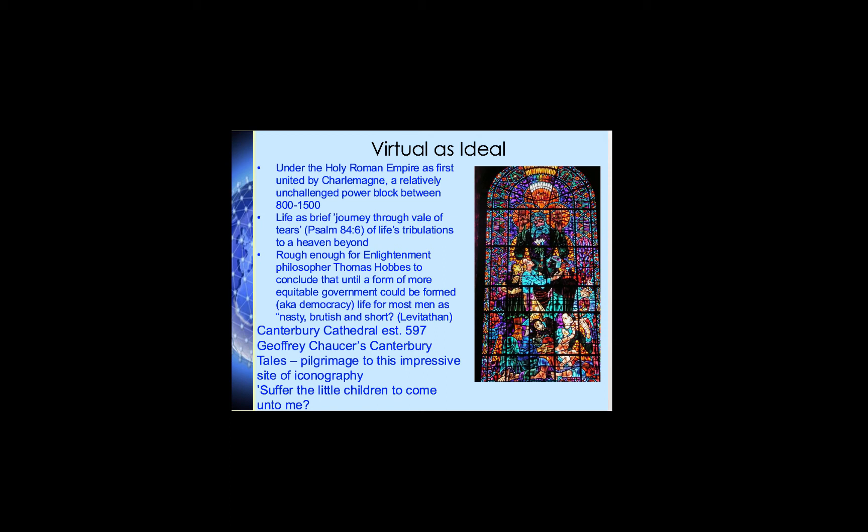The Holy Roman Empire, first united by Charlemagne, was a relatively unchallenged power block between the years 800 and 1500 — a period in which Europe was hugely united in a way that created a power block of Christendom versus the Caliphate versus the Hebrews. These were religious ways of uniting people also allied with military and economic power. There was a very common shared worldview during this period — that life was, as Psalm 84 says, a journey through a vale of tears to a heaven beyond. This was still very much a Platonic ideal: this life on earth is just temporary, a reduced vision of what we can earn in the world beyond.